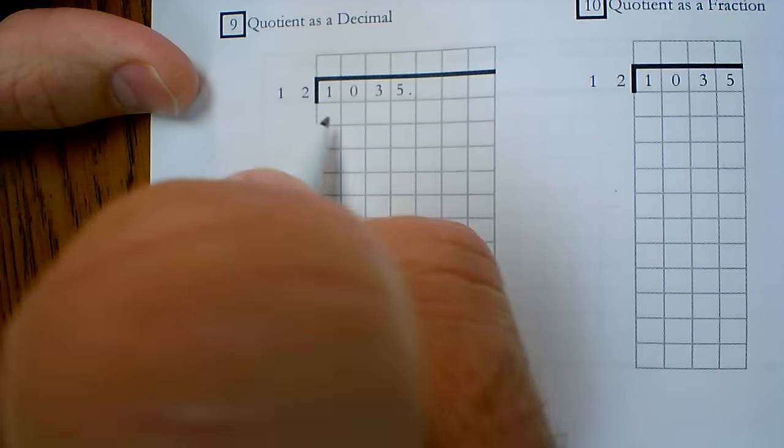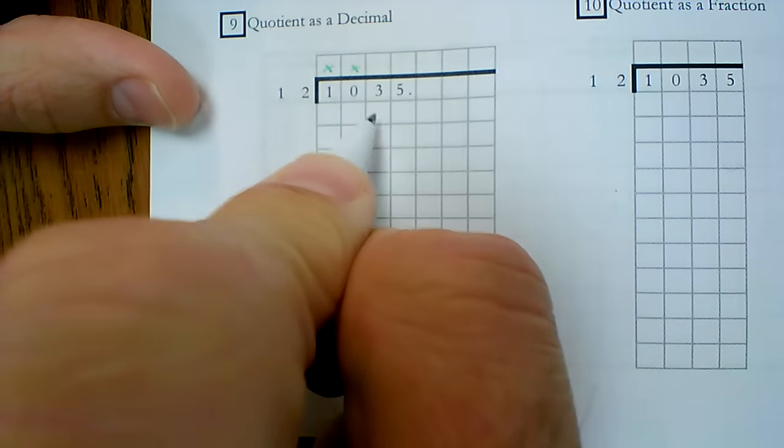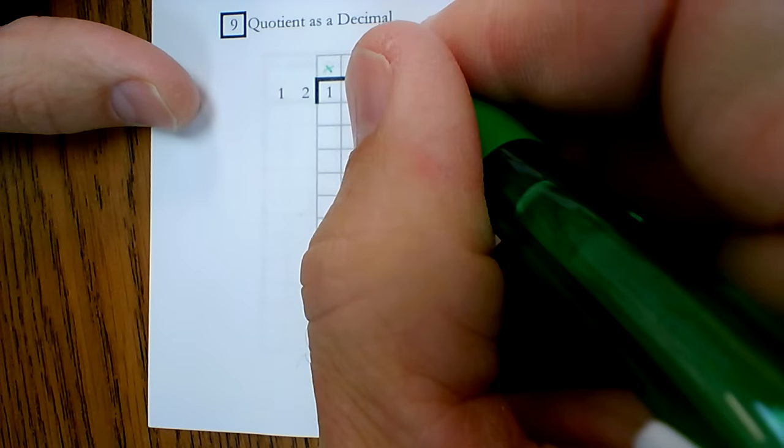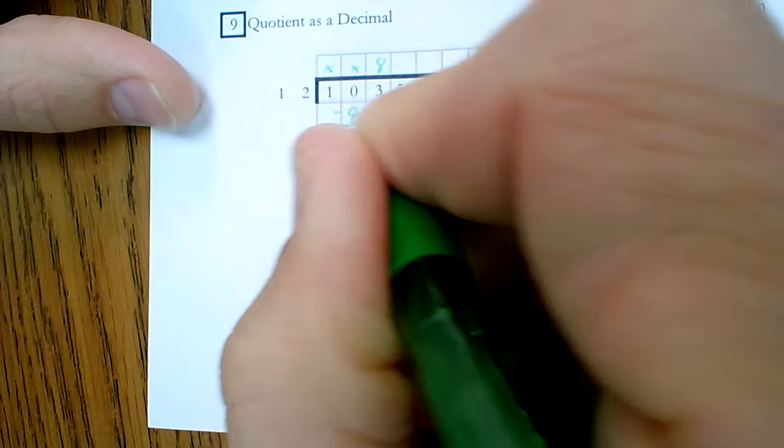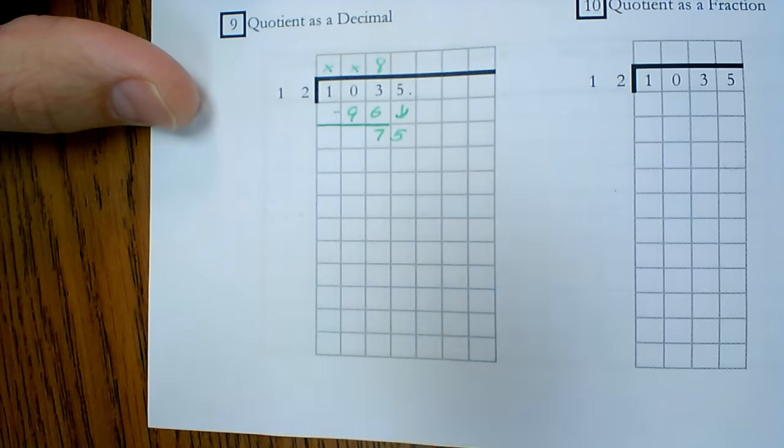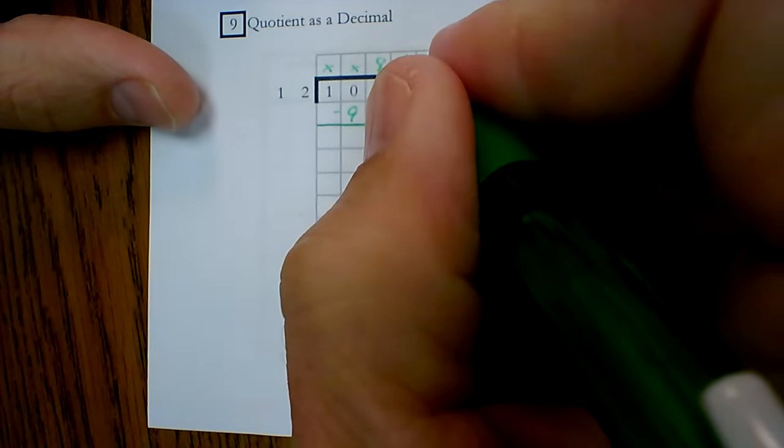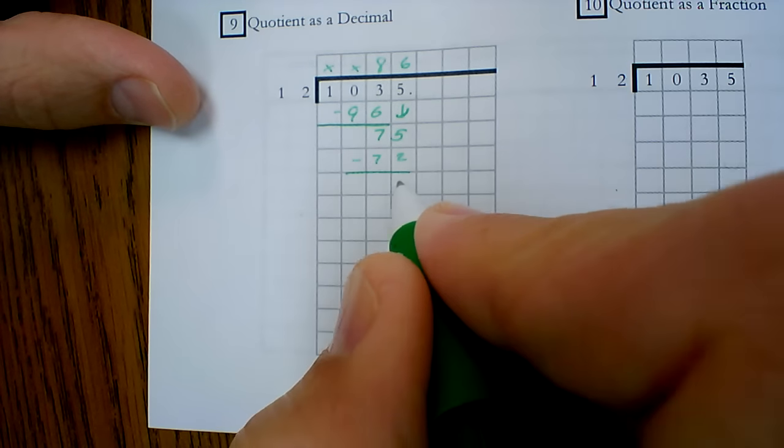So let's look at 1,035 divided by 12. Can't get any groups here. 10 is less than 12. How about 103? I know that there are eight groups, which is 96. So when I subtract, I get seven. Bring down the five. And I've got a group again. Six groups gives me 72.